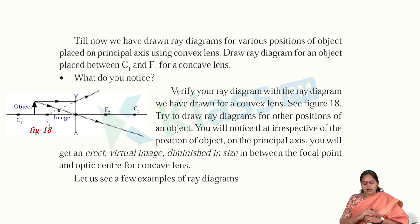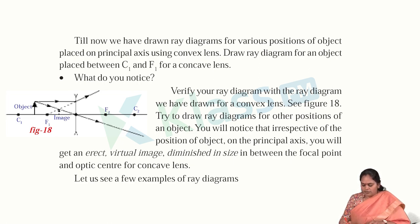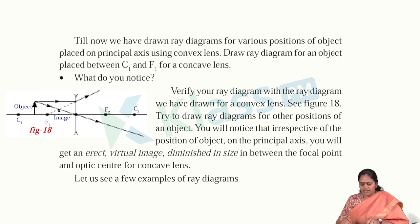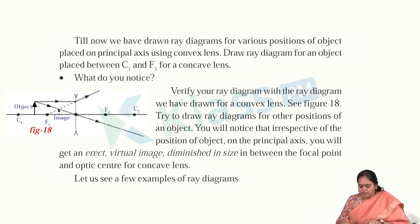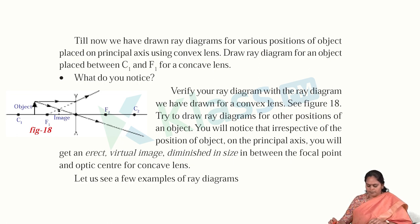We have drawn ray diagrams for various positions of objects using a convex lens. Now let us see a ray diagram for an object placed between C1 and F1 for a concave lens. Irrespective of the position of the object on the principal axis, when using a concave lens we will always get an erect, virtual, and diminished image formed in between the focal point and optic center.